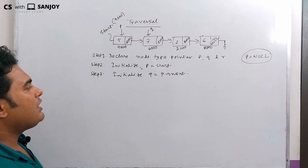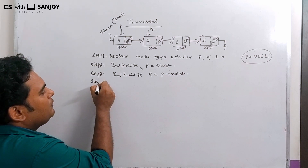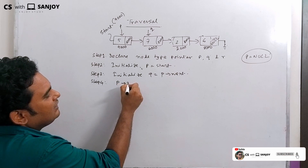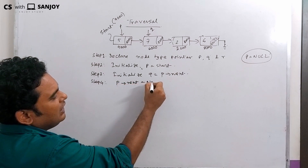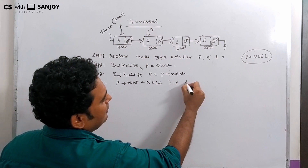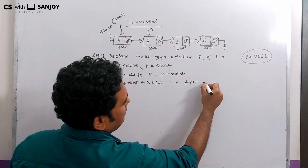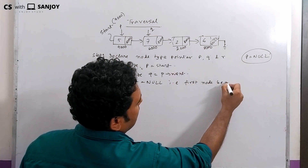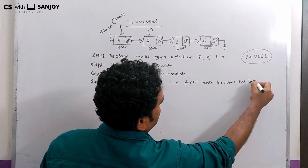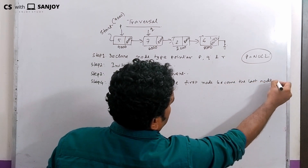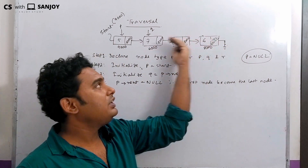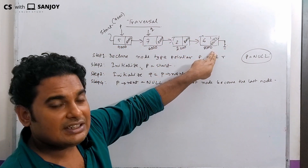Step 4: P next equals to null — that is, the first node becomes the last node. So if you have reverse traversal, it will go over to the last node.